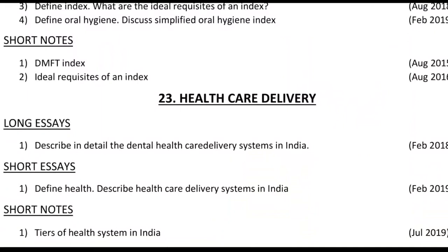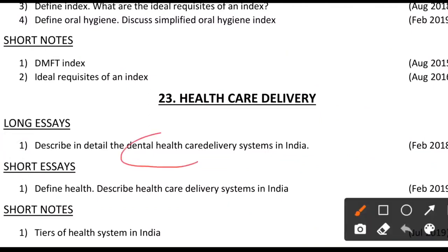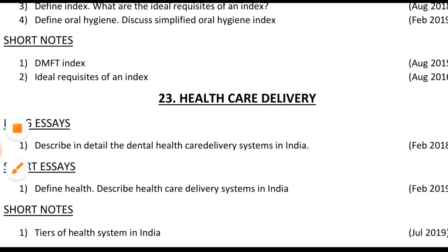Healthcare delivery system covers concepts of health care, the primary health center, and principles of primary health care. For dental health care delivery, note that less than 20% of primary health centers have a dentist — mention this problem. List out the three tiers of the rural health system — primary, secondary, and tertiary level — and discuss the healthcare delivery system in relation to the dental sector.